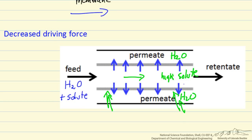We also have the possibility, if this were a long membrane tube or one of small diameter, of a pressure drop. The pressure at the exit is going to be lower than the pressure at the inlet, and this also will decrease the driving force for reverse osmosis.